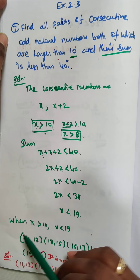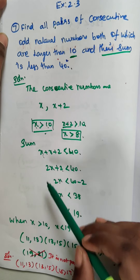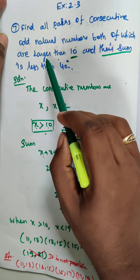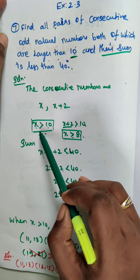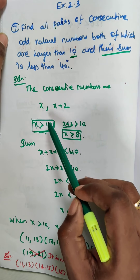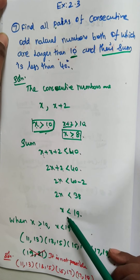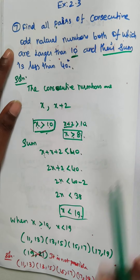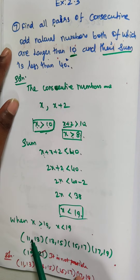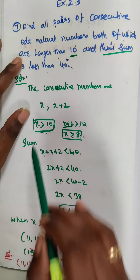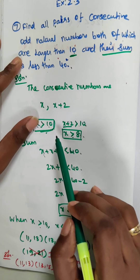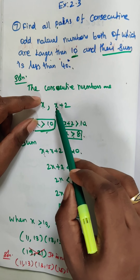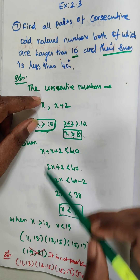So we have x greater than 10 and x less than 19. Since x must be an odd number greater than 10, we start with x equals 11. The first pair is 11 and 11 plus 2, that is 13.